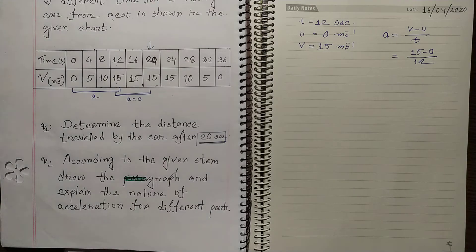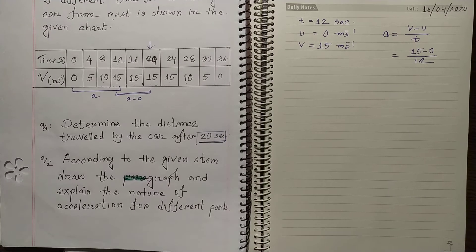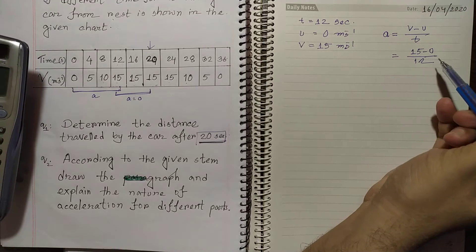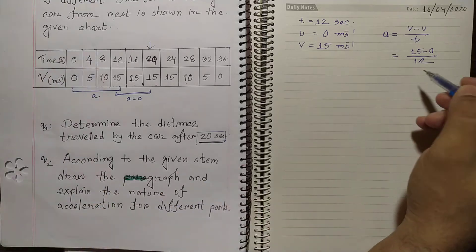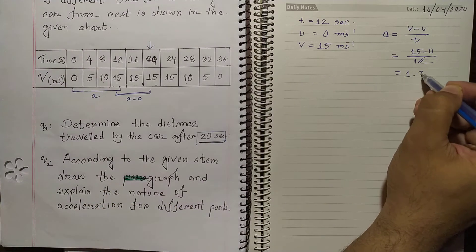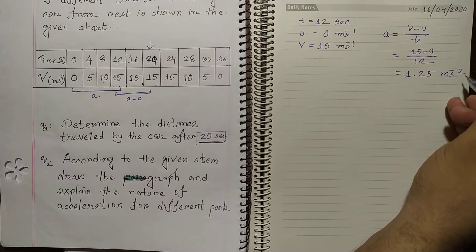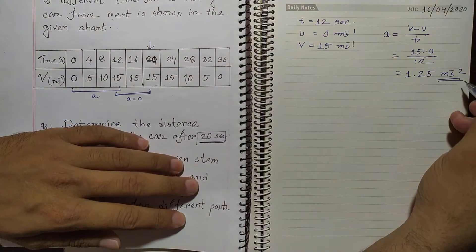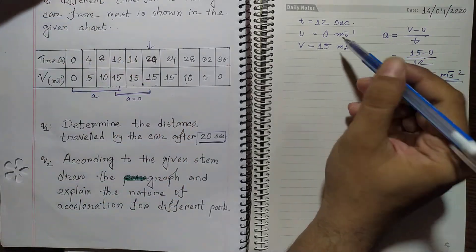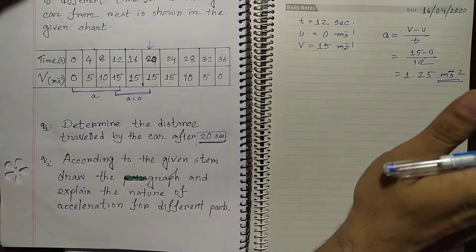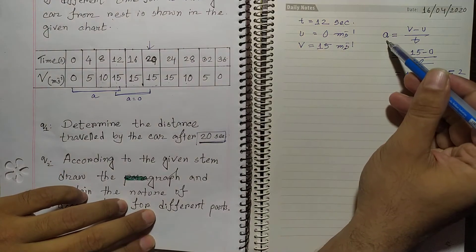According to the data, the acceleration is 15 over 12, which equals 1.25 meters per second squared. The unit — meter per second squared — is very important, so please take care of it when you substitute the data.